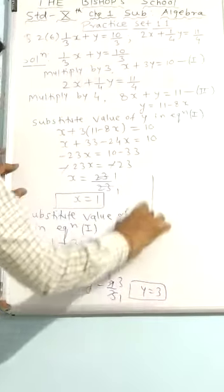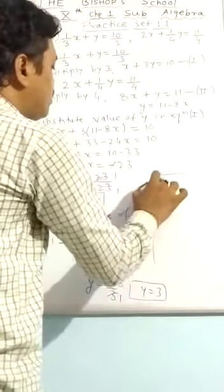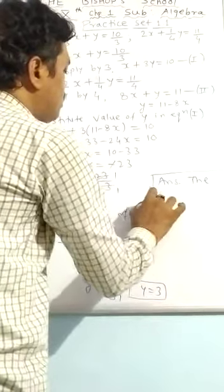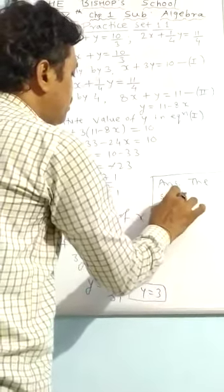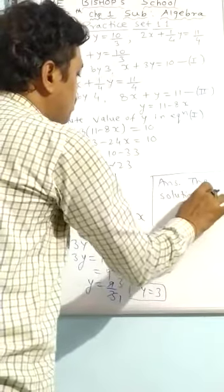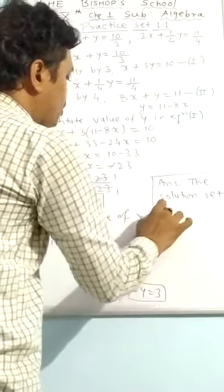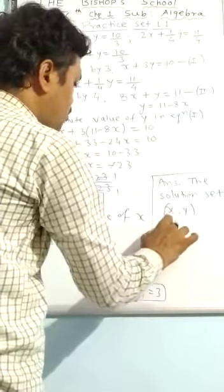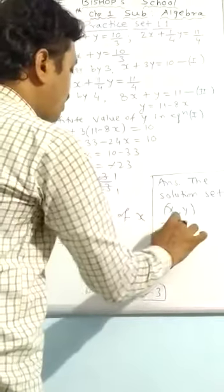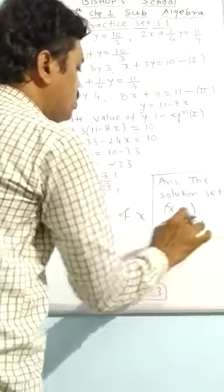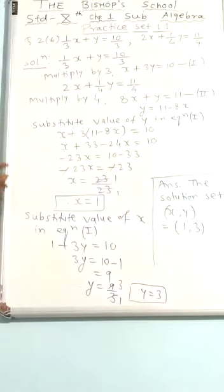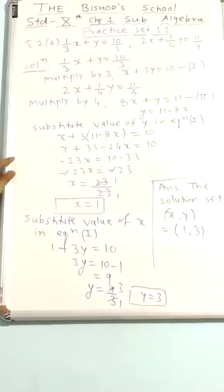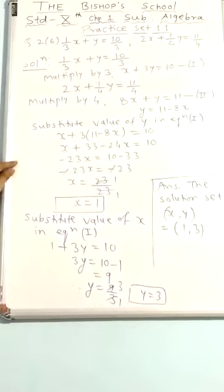So the solution we can write. The solution set: x comma y is equal to 1 comma 3. We have solved this particular question by using method of substitution.